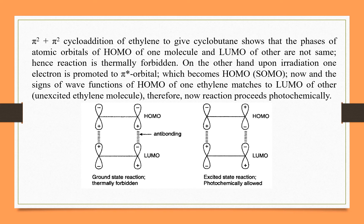Now let's consider a cycloaddition reaction. Under thermal conditions, the HOMO is in its ground state. In the thermal condition there is a high level of energy in the orbital, and the molecule can be given higher energy. In the thermal reaction, the HOMO has positive and negative lobe interactions.